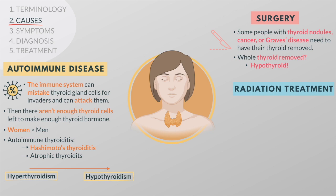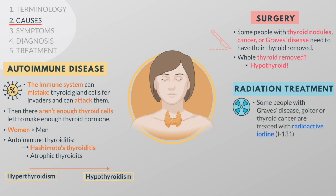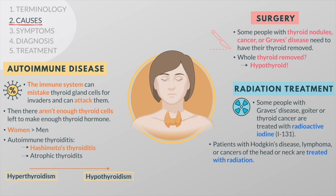Some people are treated with radioactive iodine for the purpose of destroying their thyroid gland. Patients with Hodgkin's disease, lymphoma, or cancers of the head or neck can be treated with external radiation. All these patients can lose part or all of their thyroid function.